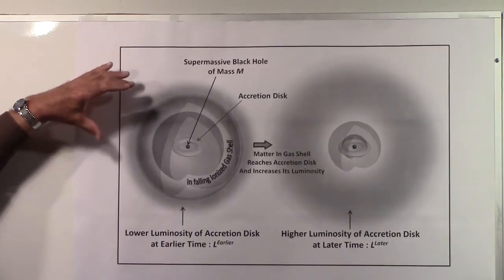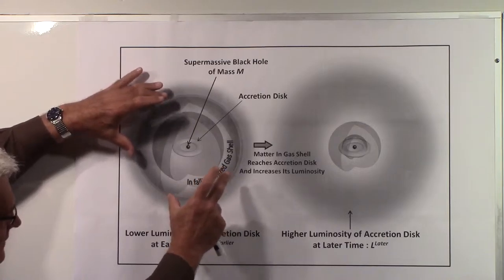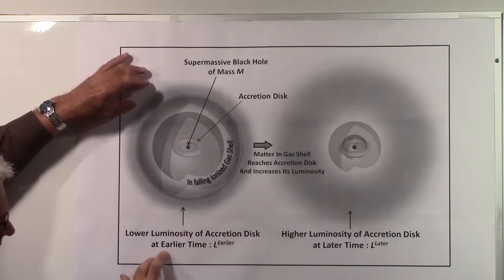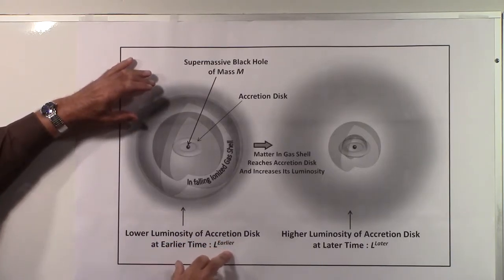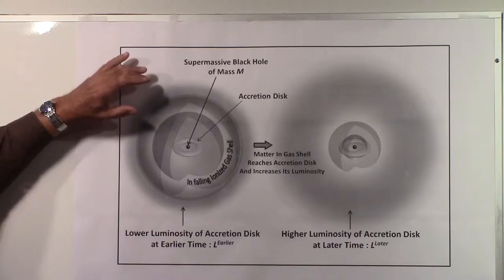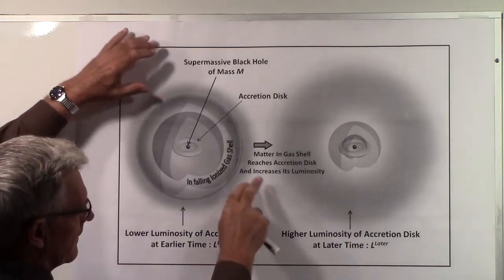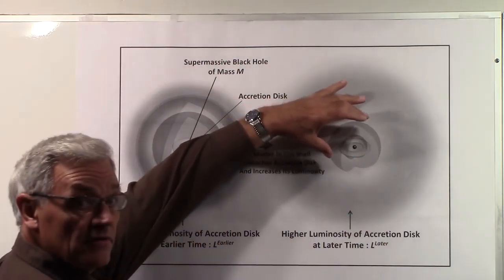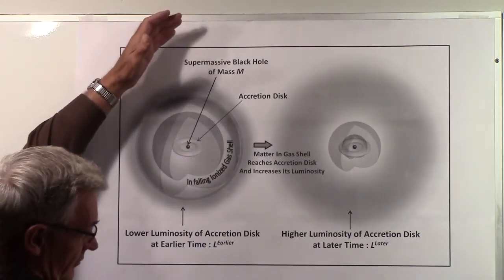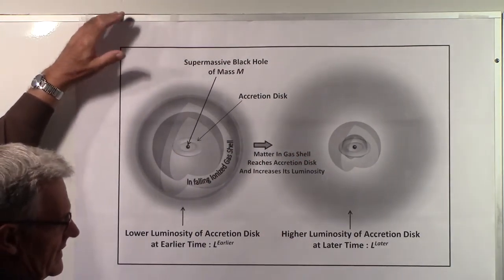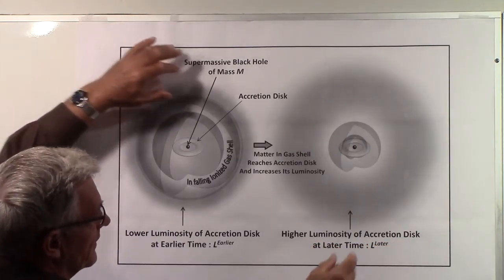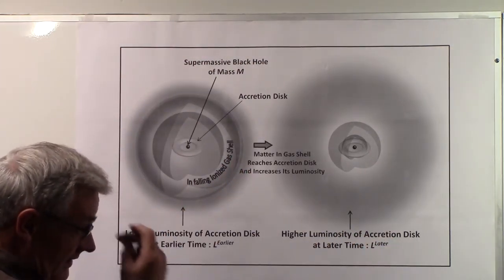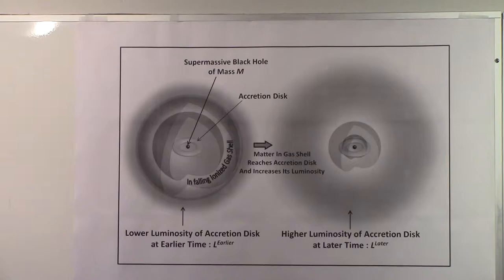What we're showing here is a shell of gas falling towards the accretion disk at an earlier time with a lower luminosity. Then at a later time, some of the matter in this shell of gas has started to fall into the accretion disk. The accretion disk appears brighter — the luminosity goes up, higher luminosity of the accretion disk — and I'm trying to show that with a larger shaded region here, indicating higher luminosity.